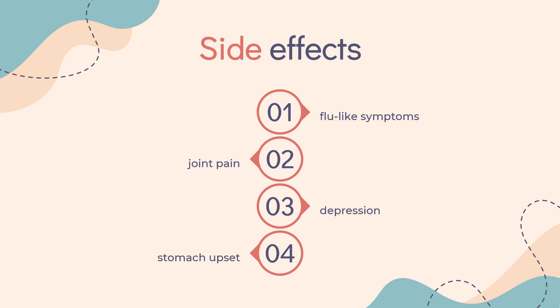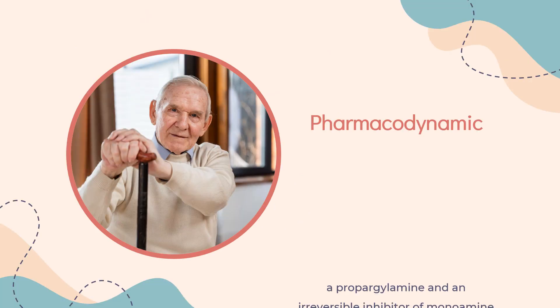When taken with Parkinson's drugs other than L-DOPA, side effects include peripheral edema, fall, joint pain, cough, and insomnia.